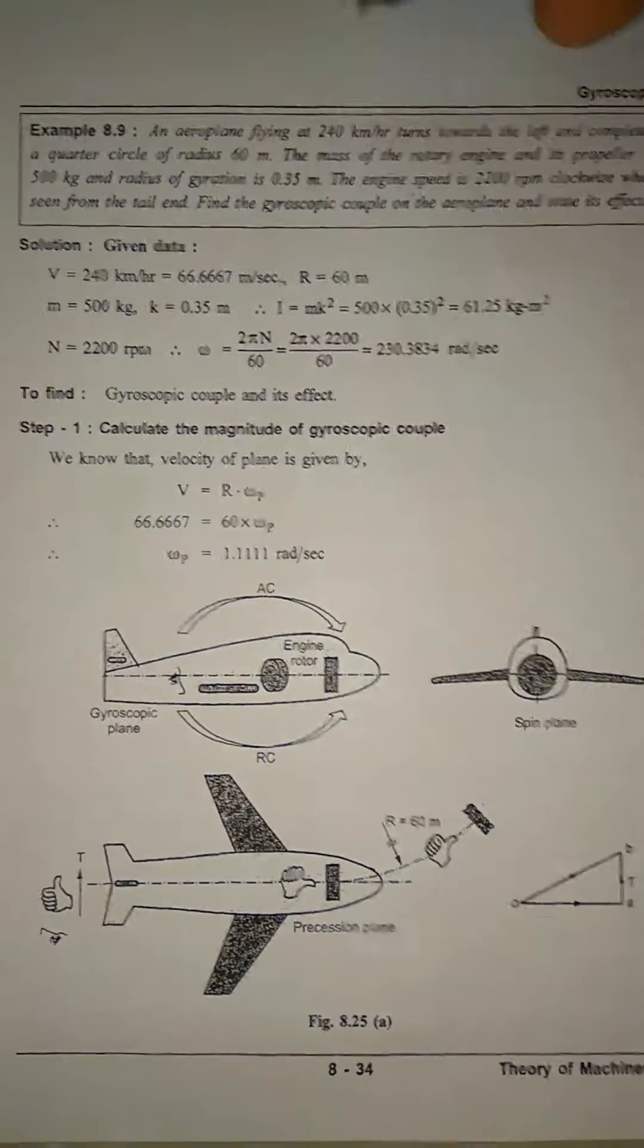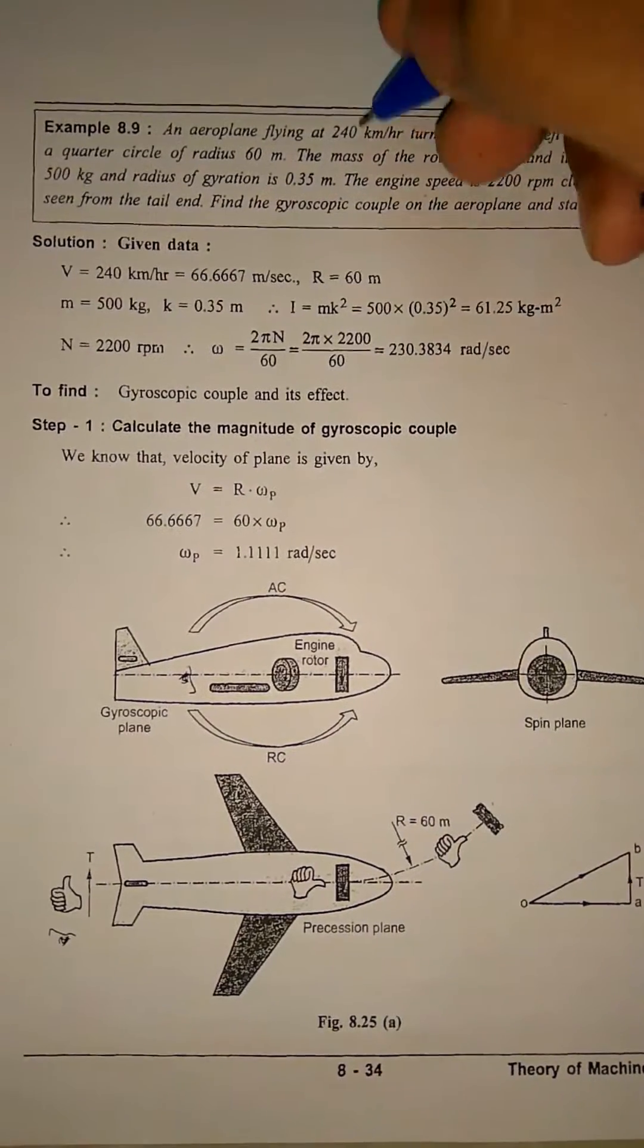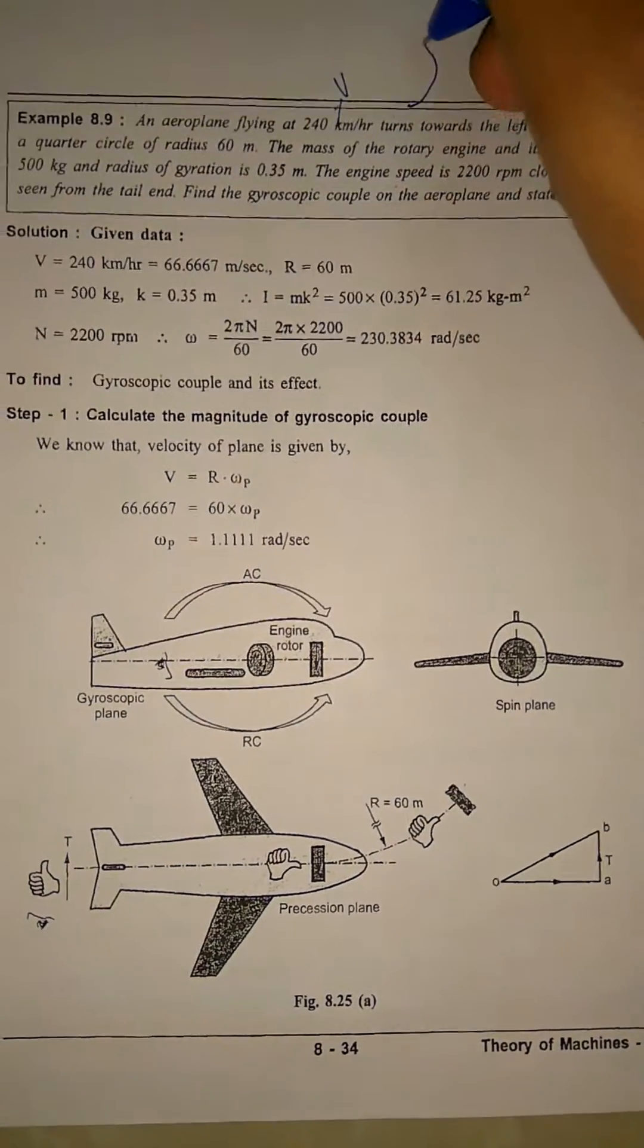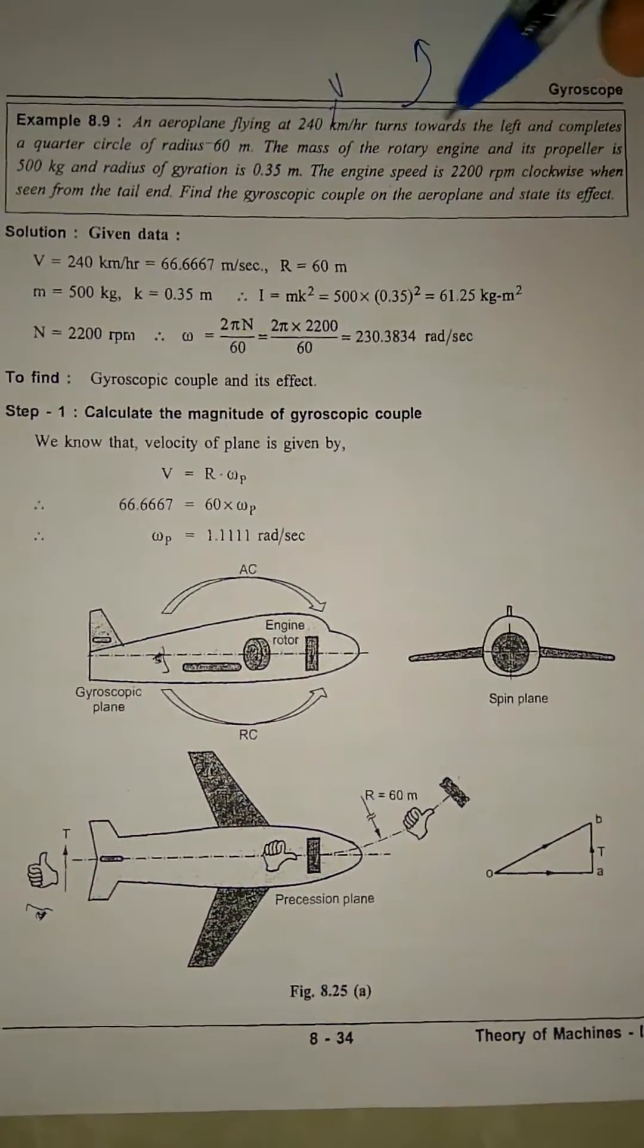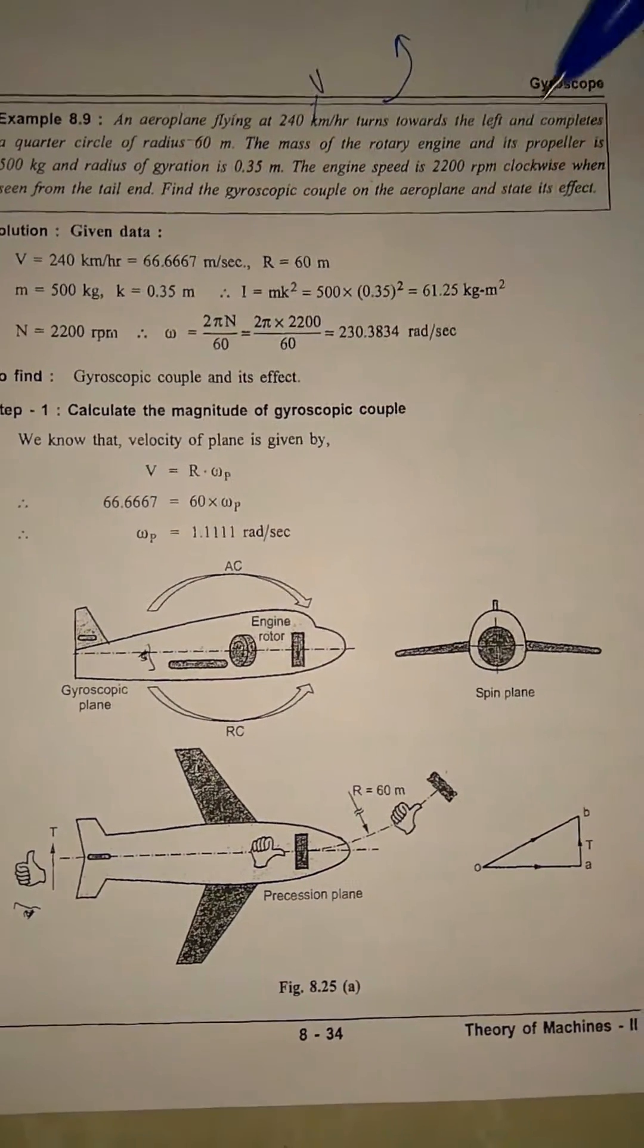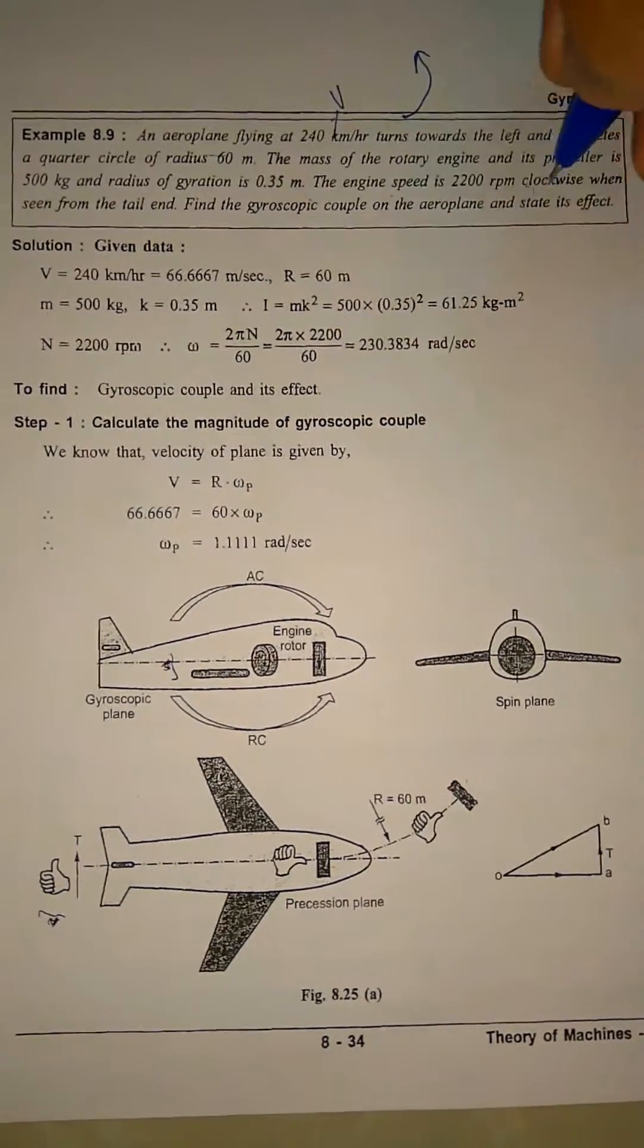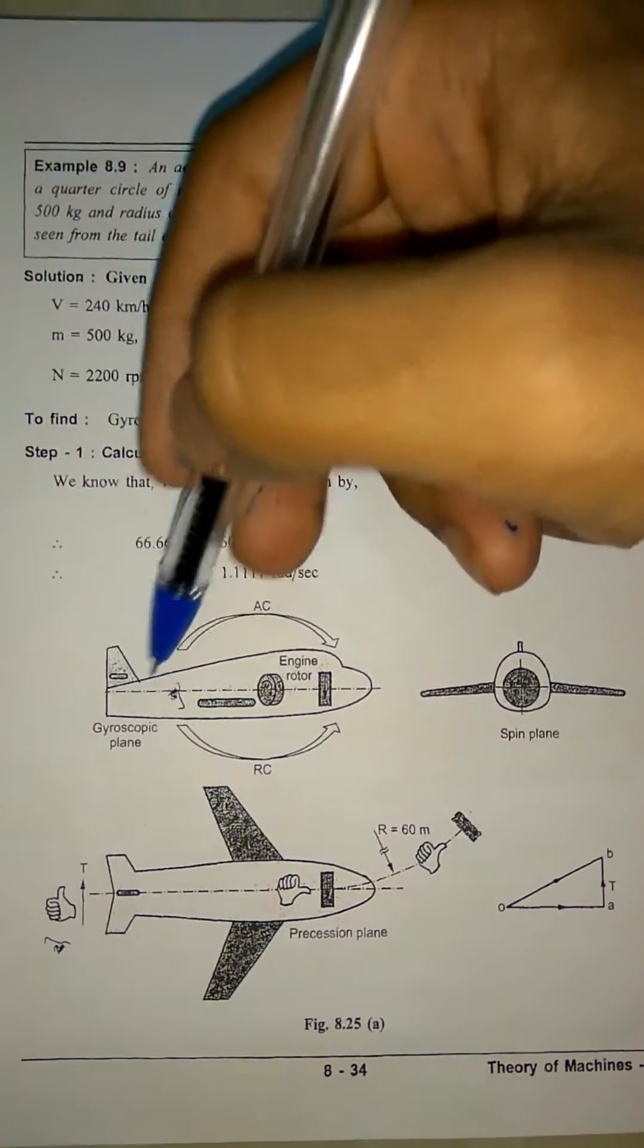An aeroplane flying at 240 kilometers per hour—note that we have been given speed v—turns towards the left, takes a turn and completes a quarter circle of radius 60 meters. The mass of the rotor is given, the engine speed is given, radius of gyration is given, clockwise seen from the tail end. We're only interested in clockwise and tail end, so the rotor is rotating in clockwise direction seen from the tail end.